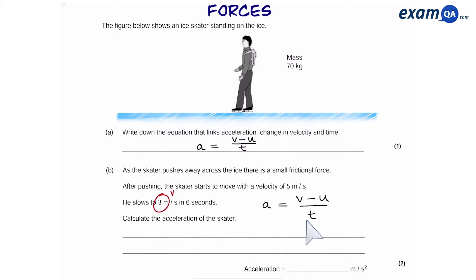So here we have V because it says he slows down to 3 meters per second. So that means it must be the final velocity. U, or the initial velocity, is 5 meters per second. And the amount of time it takes for him to slow down is 6 seconds.